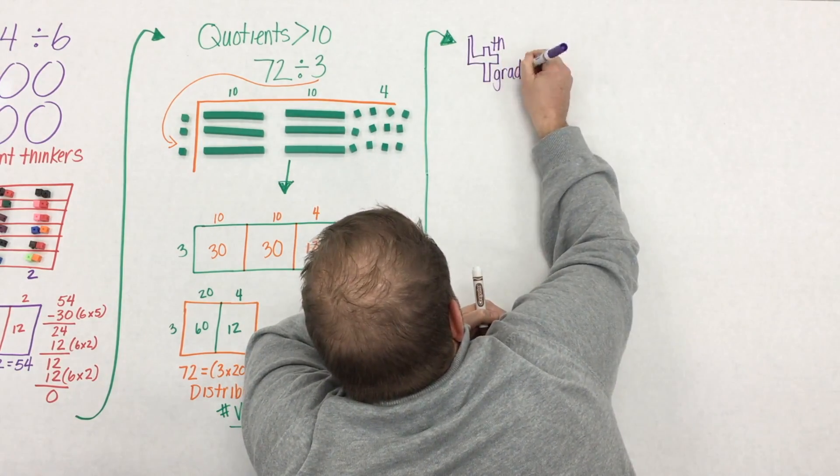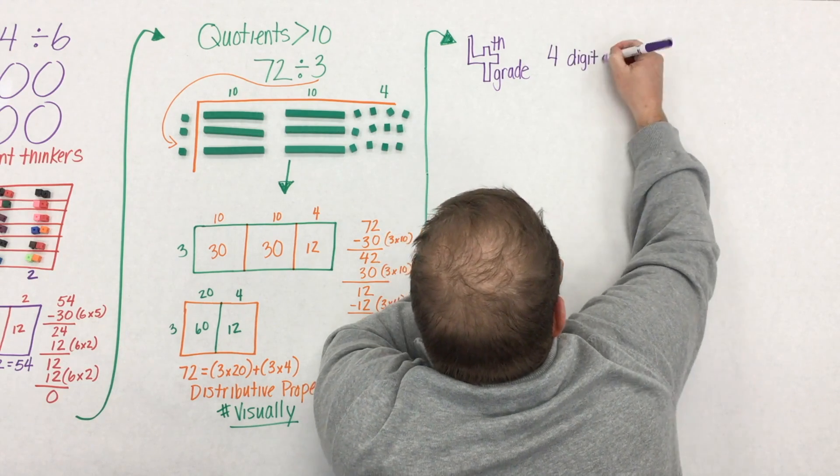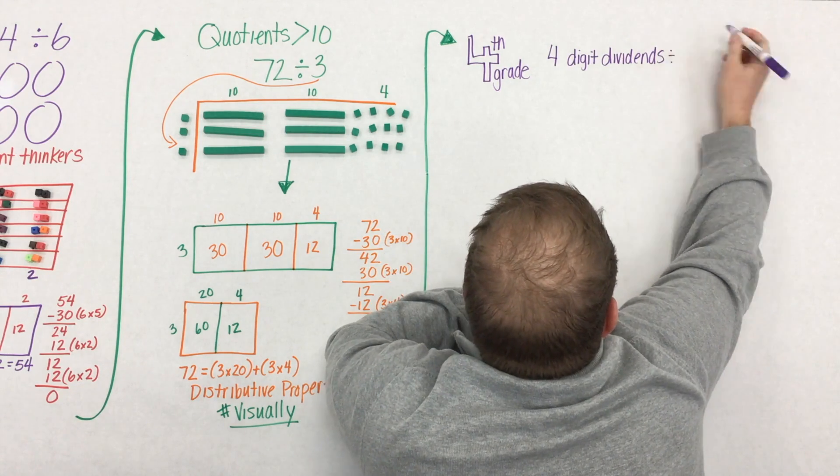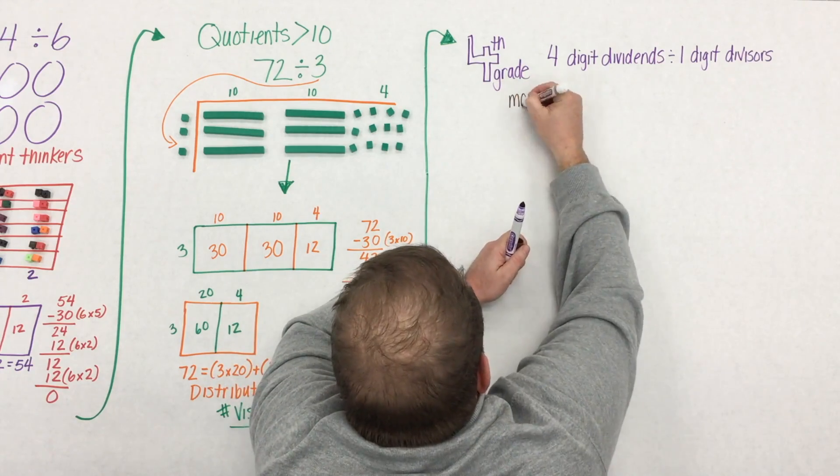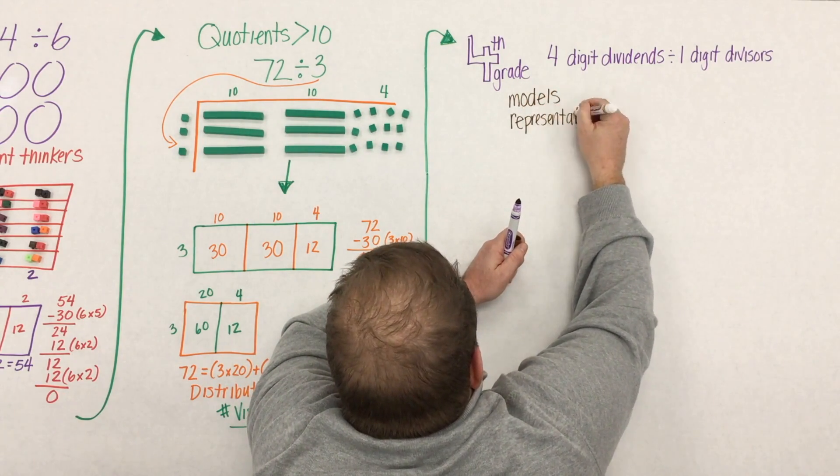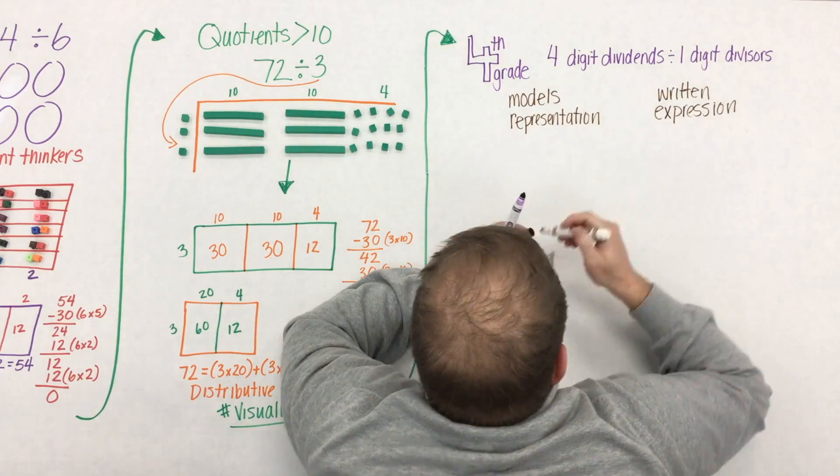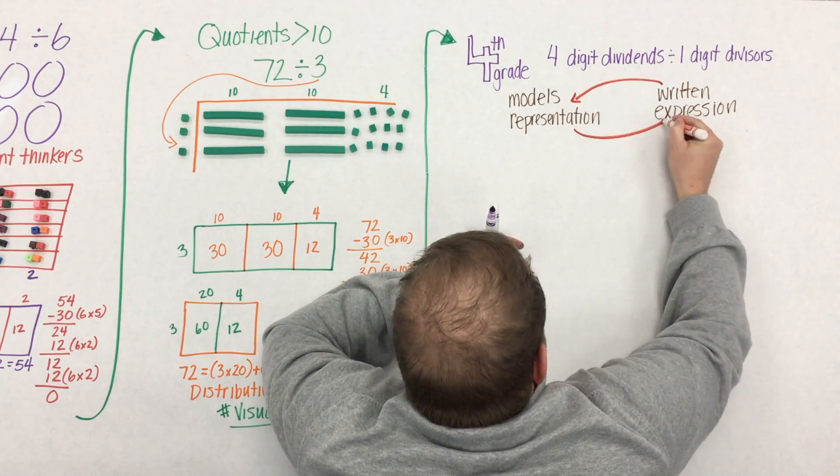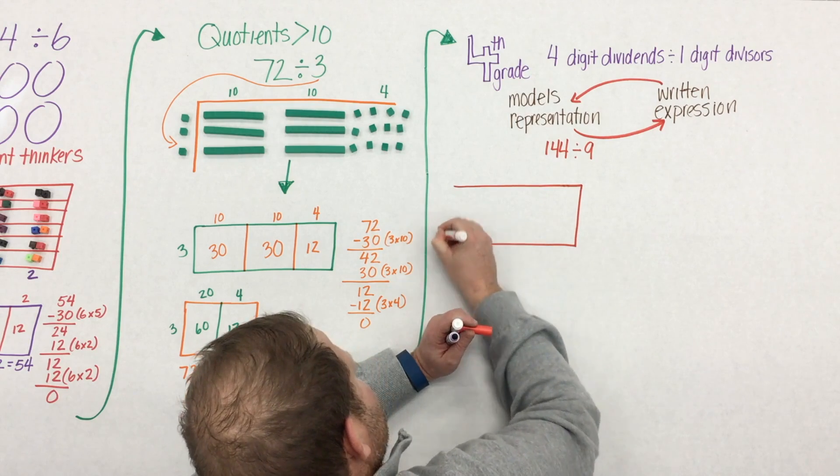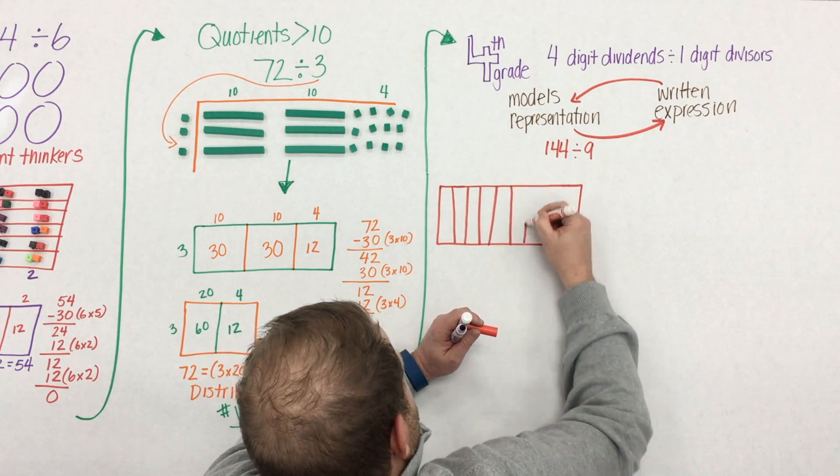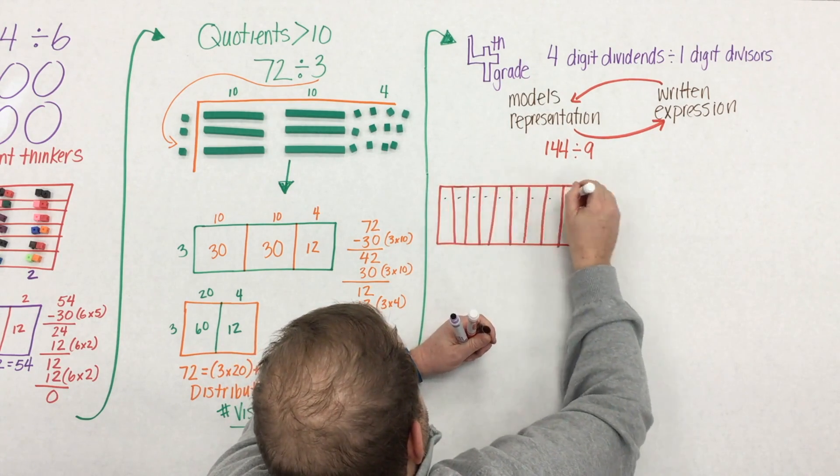In fourth grade, all that understanding we just saw should have been happening in third grade. But it might not be mastered. But in fourth grade, students will take four-digit dividends and one-digit divisors and begin to extend their understanding of division. But one thing has to be taking place, and that's continually making the connection between models and representations and written expressions.